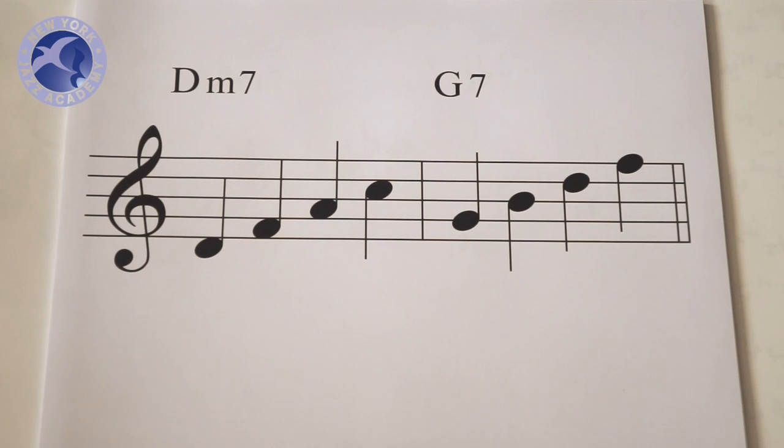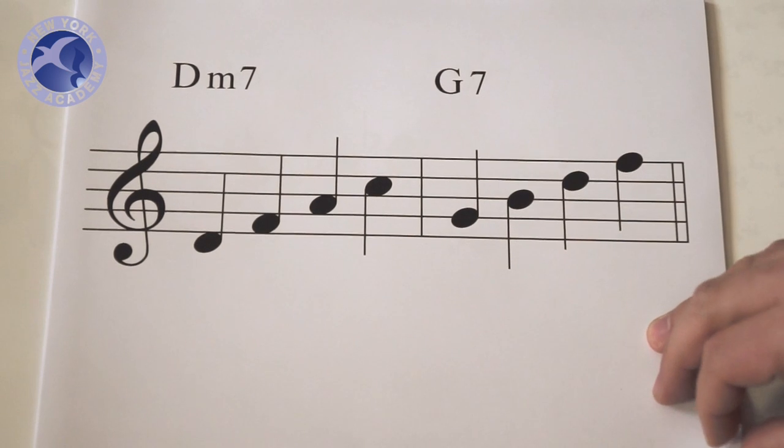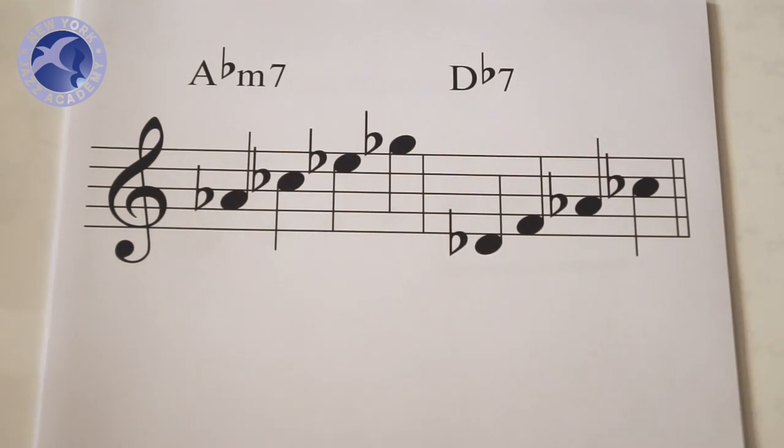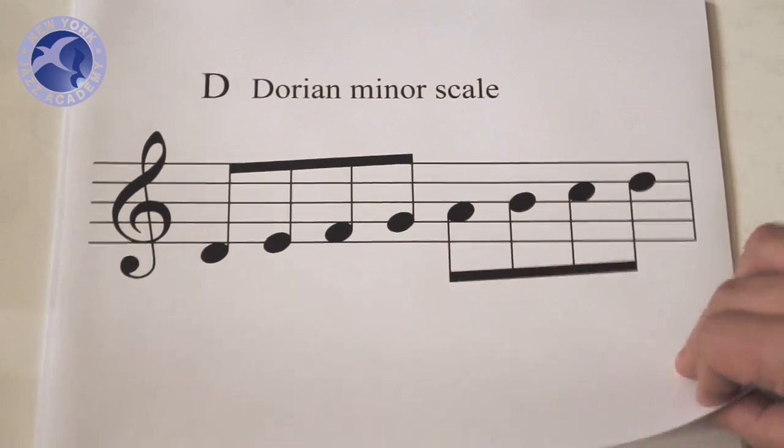This is Javier Arau with New York Jazz Academy and I'm going to look a bit at tritone substitutions today. So to really begin this process we've got to look back at the D Dorian minor scale and note that